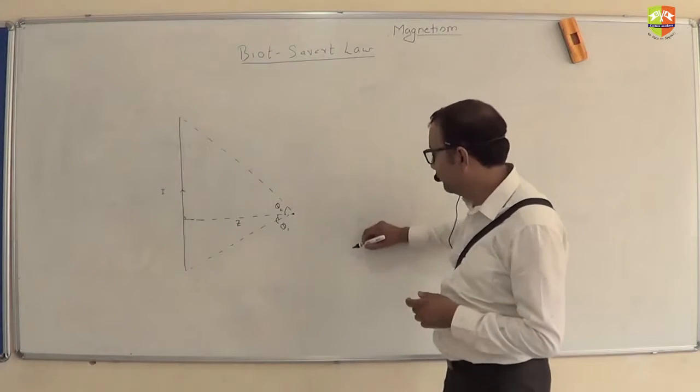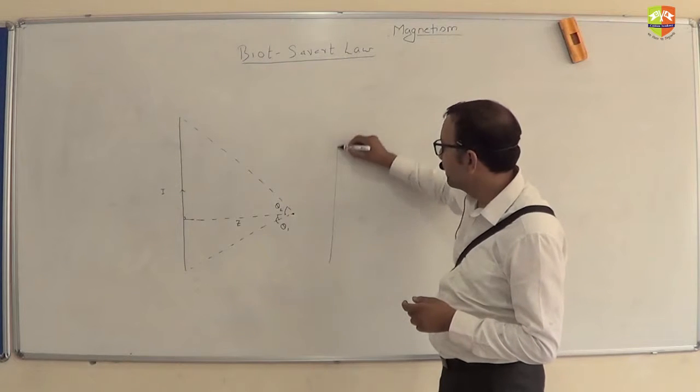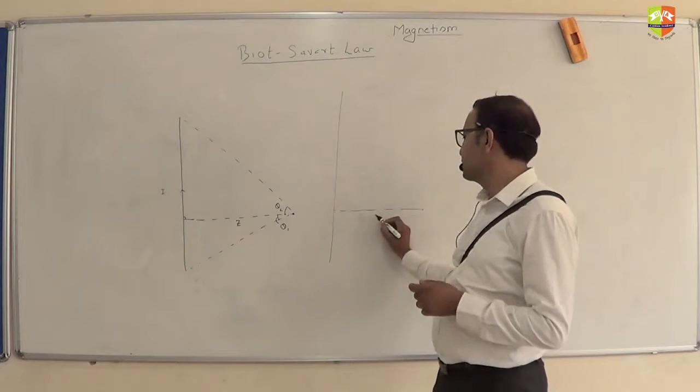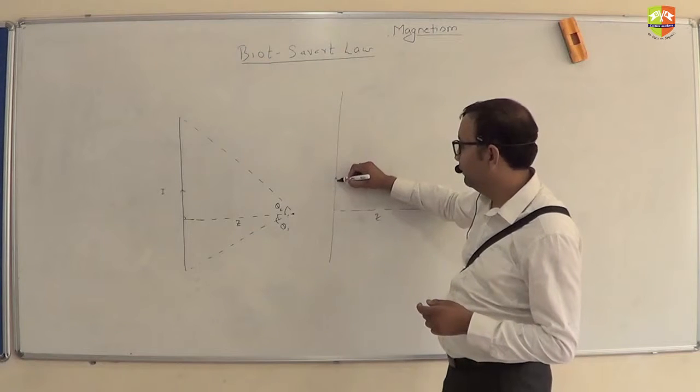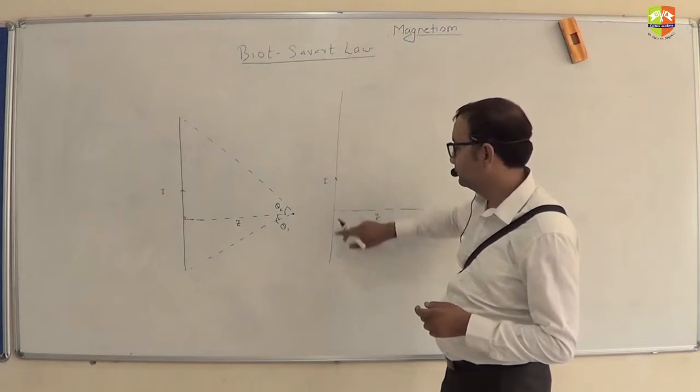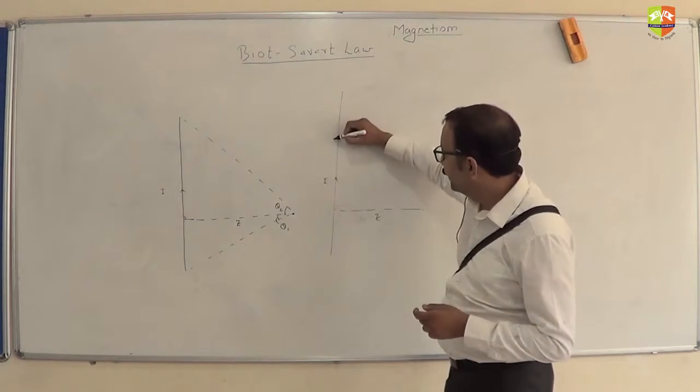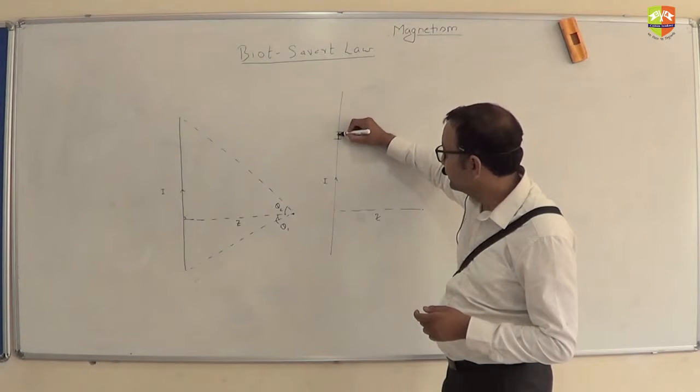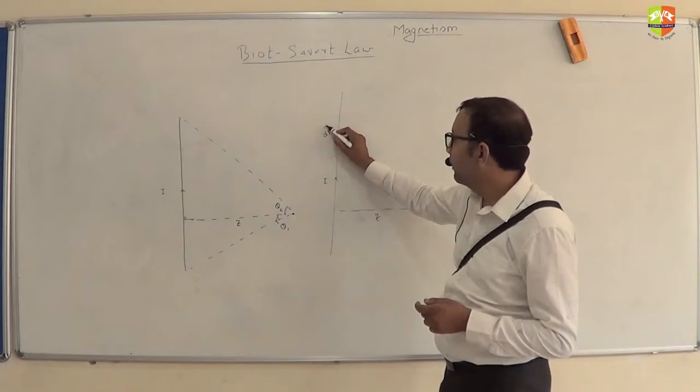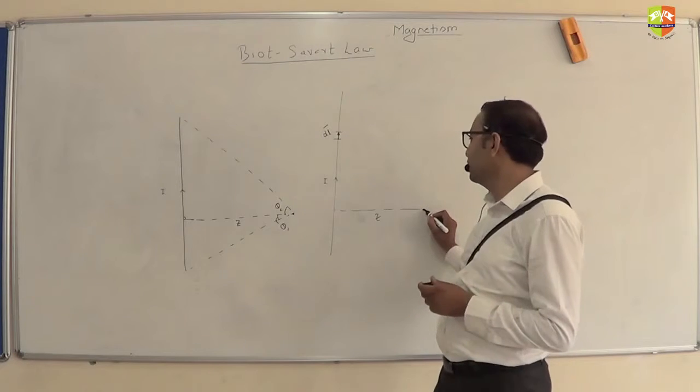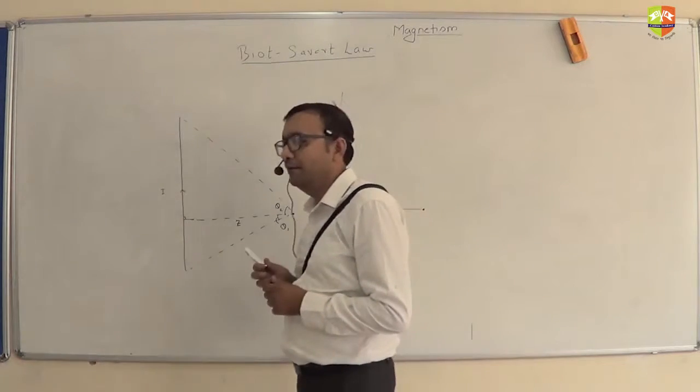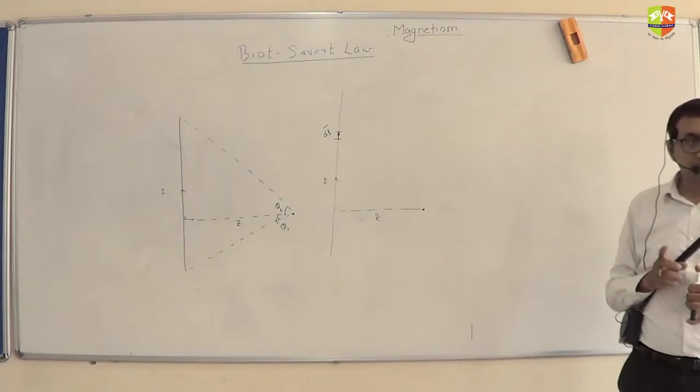It would be a good idea if you draw it again and just draw these two lines. Let's take your dl a little bit like this, this is your dl. Can you tell me what is the direction of magnetic field over here? Make out the dl.